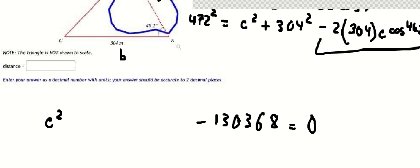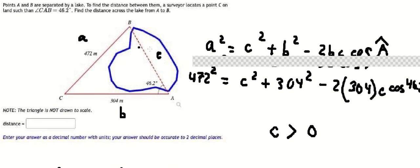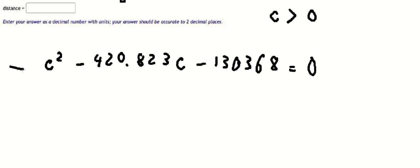We calculate this one and we have negative 420.823c. We need to know that c should be positive because this is the size of a line, so we calculate this one and we have...